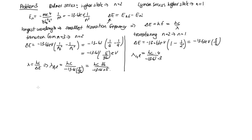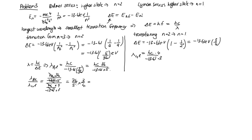Now the question asks for the ratio λ_Balmer_longest / λ_Lyman_longest. This equals [hc × 36 / (−13.61 × 5)] / [hc × 4 / (−13.61 × 3)]. The hc and −13.61 eV factors cancel, leaving 36/5 × 3/4, which gives 27/5 as the ratio for the longest wavelengths.